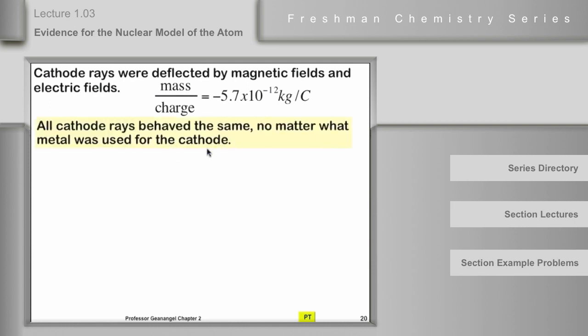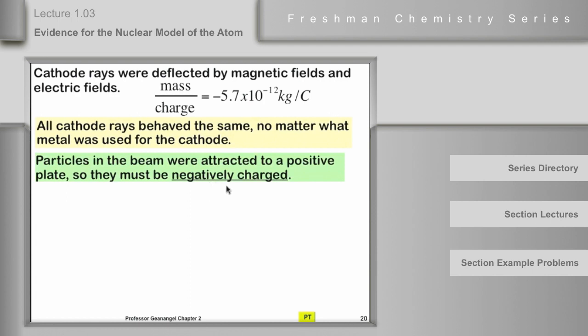They were able to determine the mass-to-charge ratio of these things, suggesting there might be particles. Notice it has a negative sign. Mass can't be negative, except on Star Trek, and therefore the charge must be negative for whatever these things are. A critical observation was that the properties of these cathode rays did not depend on what he made the electrodes out of. He could make them out of aluminum or gold or tin or copper. The properties and this number came out the same. You have to conclude from that that whatever he was talking about in the cathode rays was contained in all atoms.